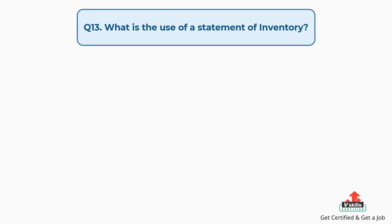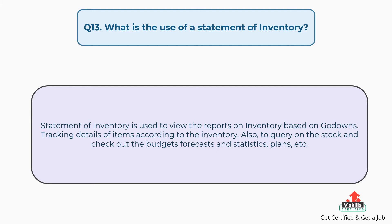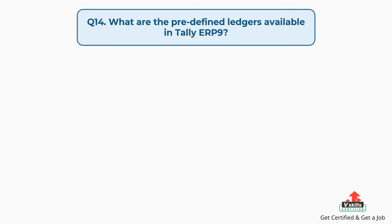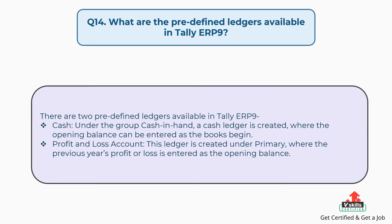Question number thirteen: what is the use of a statement of inventory? There are two predefined ledgers available in Tally ERP9. First, cash — under the group cash in hand, a cash ledger is created where the opening balance can be entered as the books begin. Second, profit and loss account — this ledger is created under primary, where the previous year's profit or loss is entered as the opening balance.